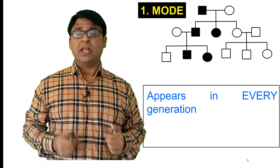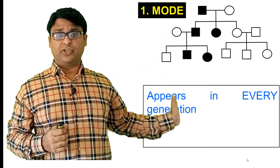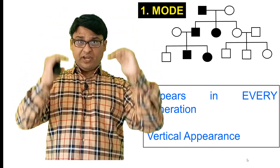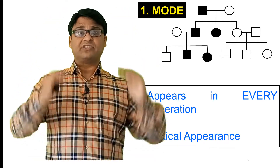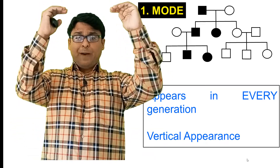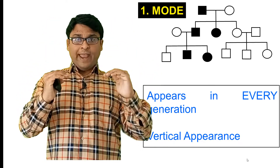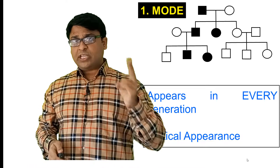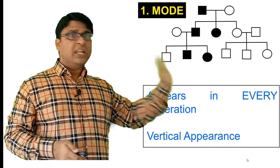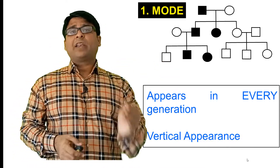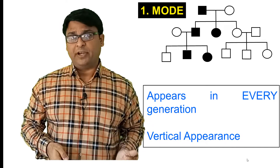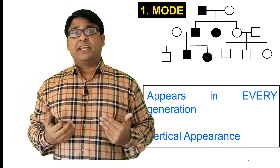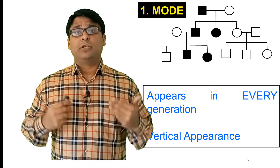The first characteristic of autosomal dominant disorder is that it appears in every generation — there is no escape generation. The second characteristic is it has a vertical appearance: it passes on to every next generation going down vertically. If you see these two characteristics in any genetic pedigree, you label it as autosomal dominant disorder with full confidence.